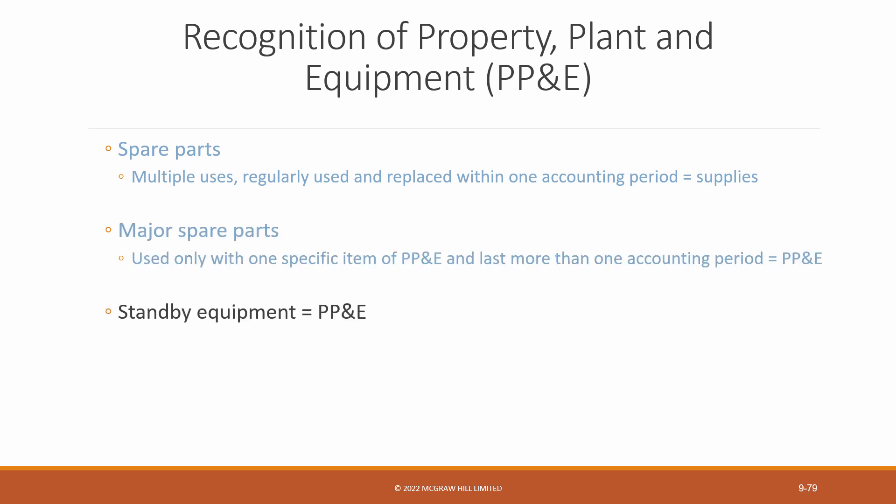In addition, consider a unique type of spare part called standby equipment. An example would be a transformer for a utility company. These are held as backup for major equipment which is in use and must be classified as PP&E. Then there's servicing equipment — equipment used to service other items of PP&E. These are also recognized as PP&E as long as they are used for a specific asset and are useful for more than one accounting period.